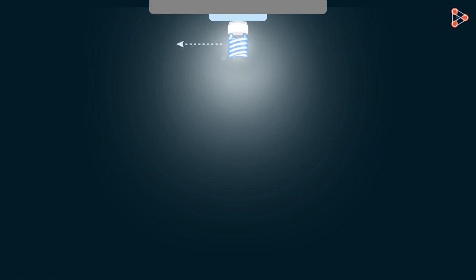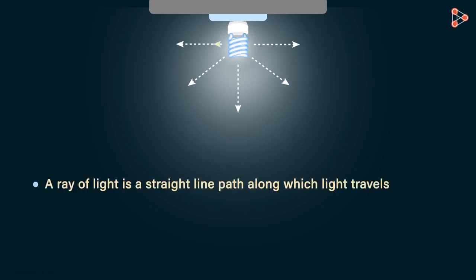Let us denote each direction with a straight line and an arrow on it pointing in the direction where the light is traveling. So all these arrows represent various paths along which light is traveling. These arrows are what we call rays of light. Here is how we define a ray of light: a ray of light is a straight line path along which light travels.